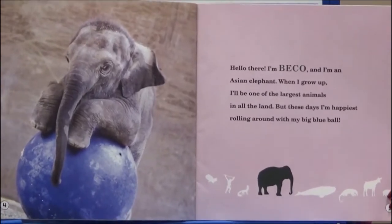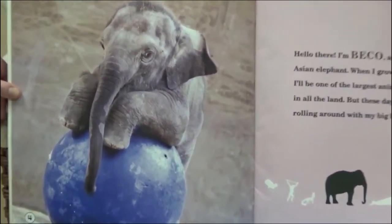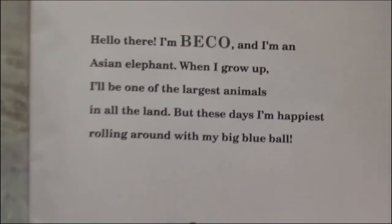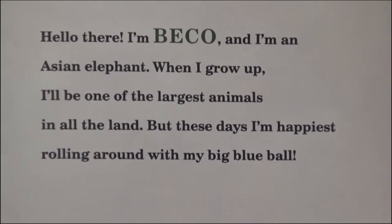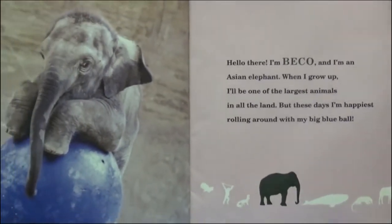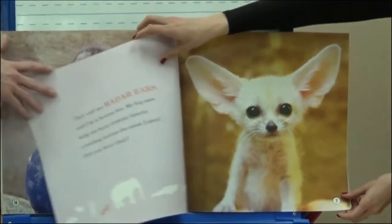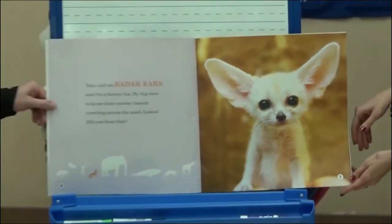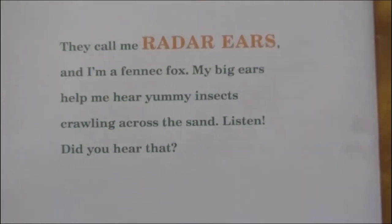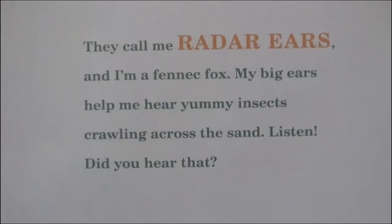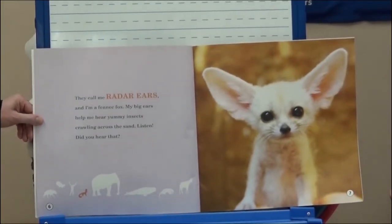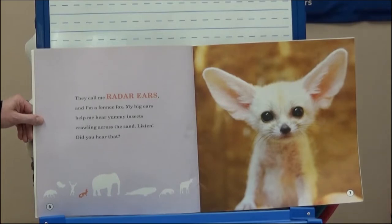Remember, Kindergarten, while I'm reading, think about what you think the main idea is. Hello there, I'm Beko, and I'm an Asian elephant. When I grow up, I'll be one of the largest animals in all the land. But these days, I'm happiest rolling around with my big blue ball. They call me radar ears, and I'm a fennec fox. My big ears help me hear yummy insects crawling across the sand — listen, did you hear that? Those big ears are what help him hear so well — that's a detail about our fox.